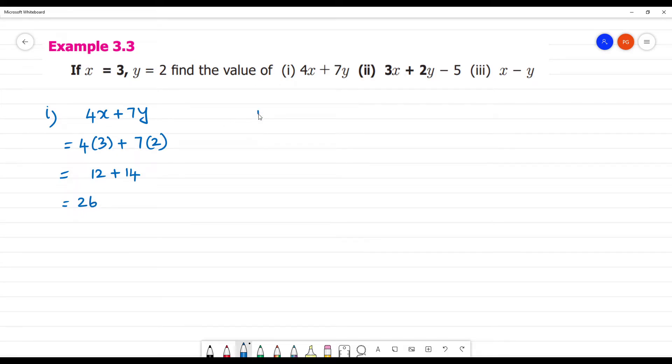Next is second one. 3x plus 2y minus 5. So what is 9 plus 4 is 13. 13 minus 5 is equal to 8.